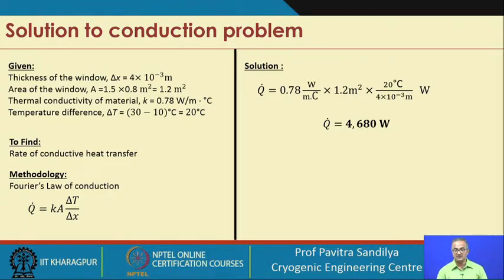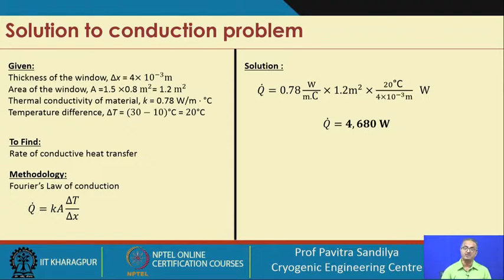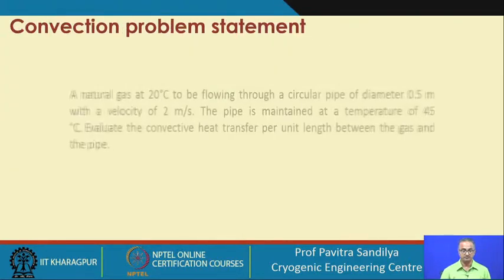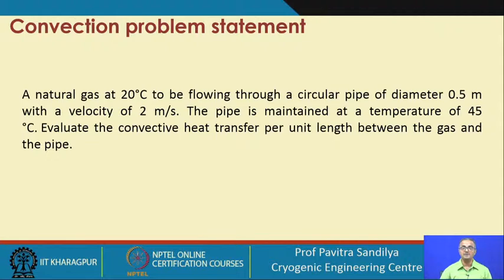You can see that 4.68 kilowatt is quite high compared to a typical 20 or 60 watt bulb used at home — this heat transfer through the window is substantial. That is why we sometimes put curtains over glass windows to prevent heat from moving from outside to inside during summer. Next, we have a problem on convective heat transfer.